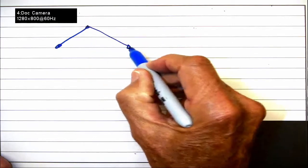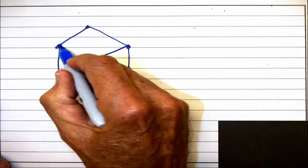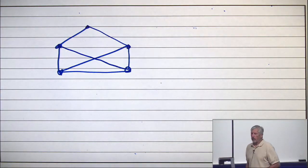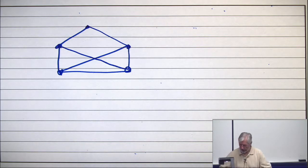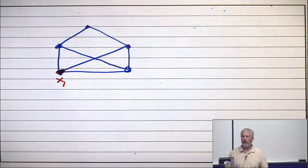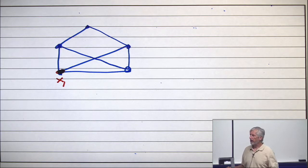So here's one. Does this graph have an Euler trail? Let's try. Let me just start here as my x1 and see if I can find an Euler trail.